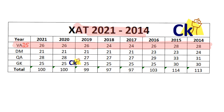Same way, from the DM point of view — 21 questions. The last 5 years, the number of questions has been 21, with 23 or 24 in some years. So the number of DM questions is around 21.